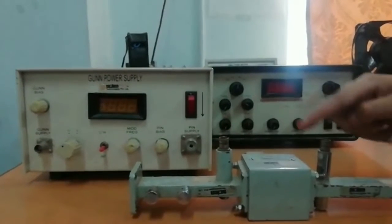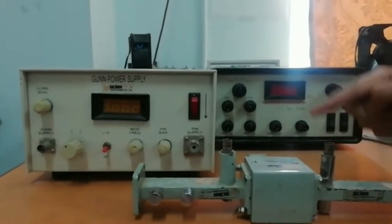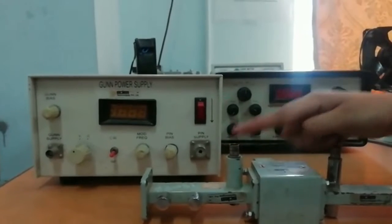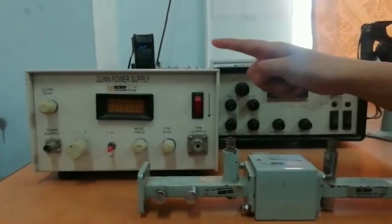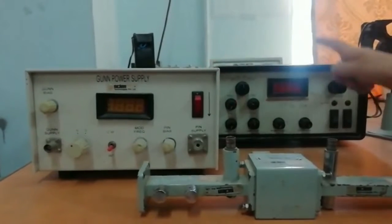These are the Gunn diodes and the PIN diodes. If you want to calculate the voltage, power, and characteristics of the Gunn diode and PIN diode, then we need to connect the Gunn power supply instead of the klystron power supply.